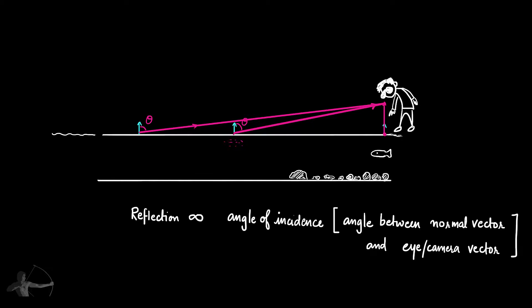When we write the shader code, we will need something that gives us a changing value when the angle between view direction and the normal of the surface changes. We will not be able to use the value of this angle directly. What we will use is something we have been using for almost every lighting shader — we will use the dot product between n and v.